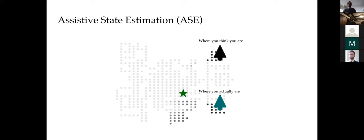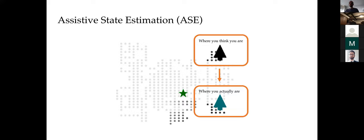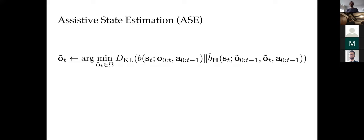The ultimate goal of ACE is to make the user's beliefs match their actual true state. One challenge is that the assistant doesn't necessarily know the true state, so we settle for making the user's beliefs match the assistant's beliefs, which we assume are more accurate than the user's. Formally, we try to minimize the KL divergence between the assistant's beliefs and the user's beliefs. The assistant synthesizes a modified observation that it thinks will make the user believe in the same state as the assistant does.